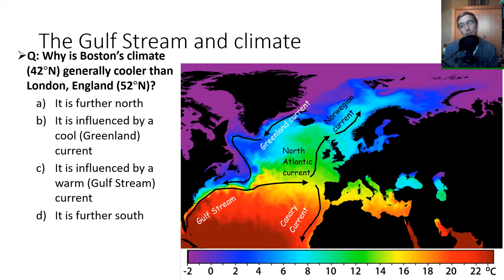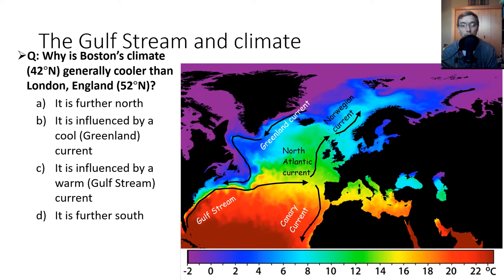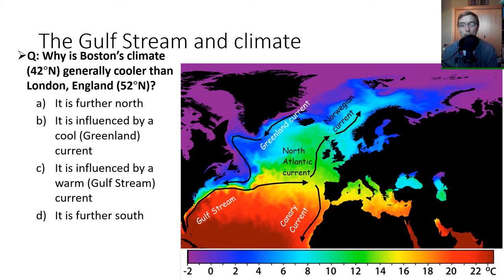Why is Boston at 42° North generally cooler than London, England? The answer is B — it's influenced by a cool Greenland current. Even though both cities are at similar latitudes, the ocean currents driving their respective climates differ substantially.